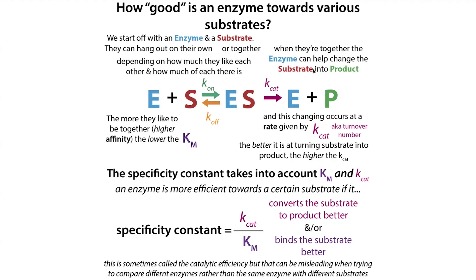We ignore the enzyme-product complex and the reversibility from ES to EP, and we consider that the rate-limiting step is going to be Kcat. We lump the enzyme-to-product conversion and the product release together into one thing, all encompassed by our Kcat.